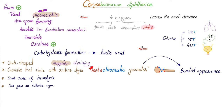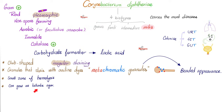What does meta mean? Change — everything is changing. Chromatic: chrome means color, that's why Google Chrome has a colorful logo. Metachromatic means changing colors. That's why the club appears beaded because of all the granules. When you look at them under the microscope, they resemble Chinese letters. They can cause small zones of hemolysis and can grow on tellurite agar.